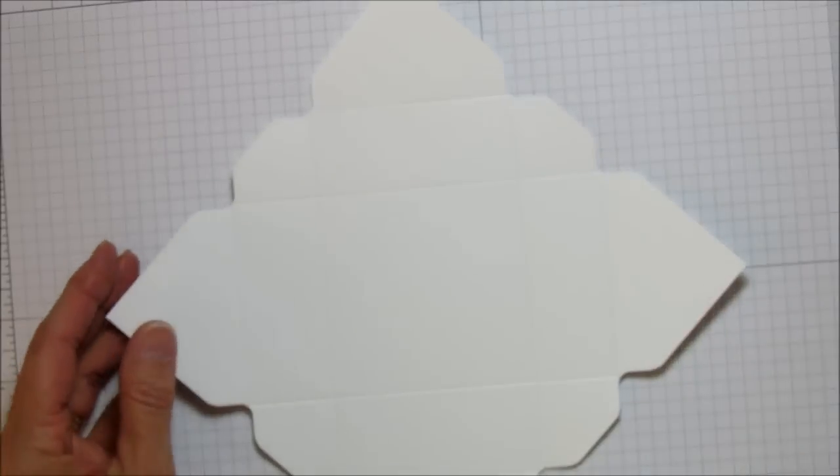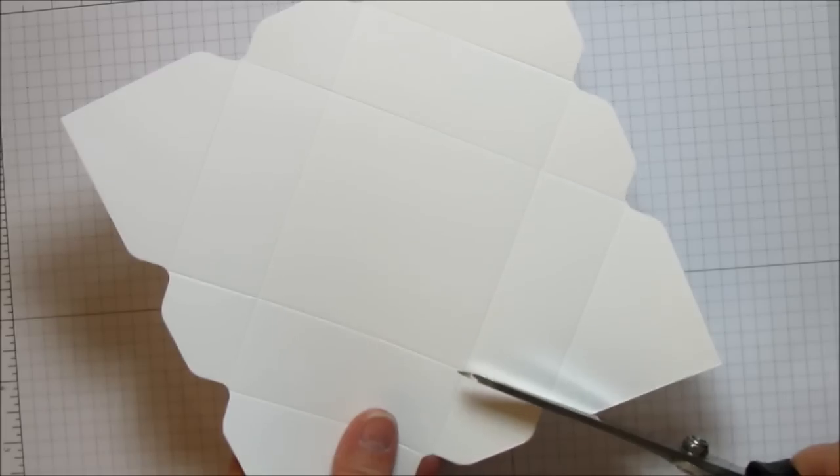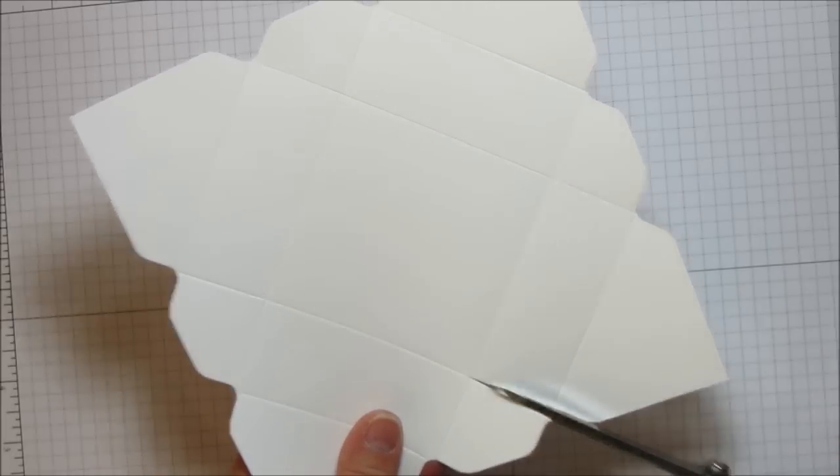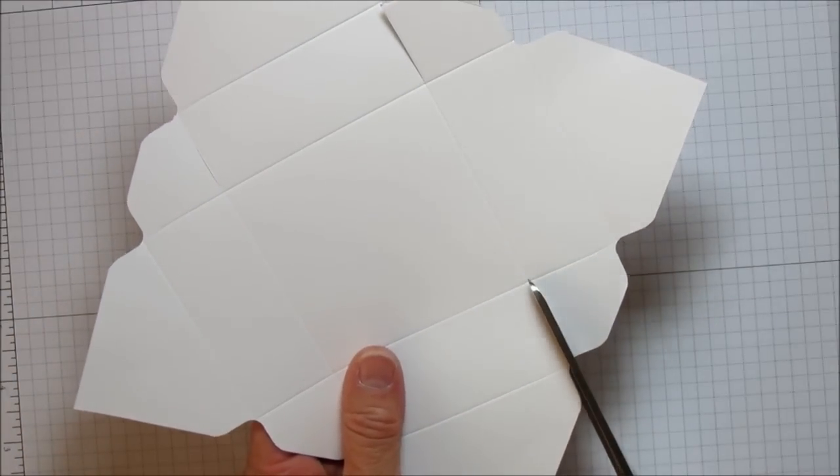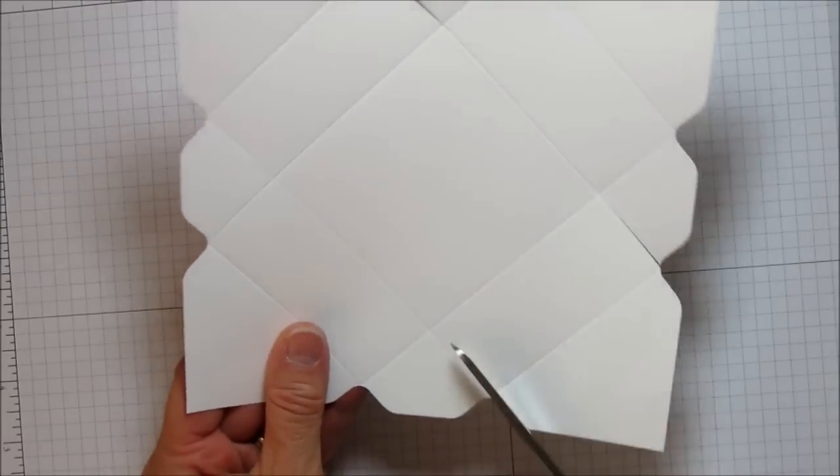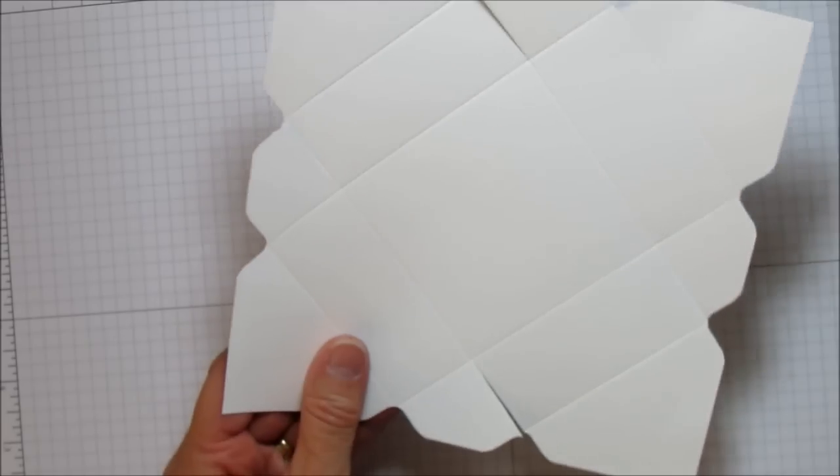Now to put this one together it's a little bit different. You have flaps so you need to cut into these to the first score mark and you're going to do that on both sides.